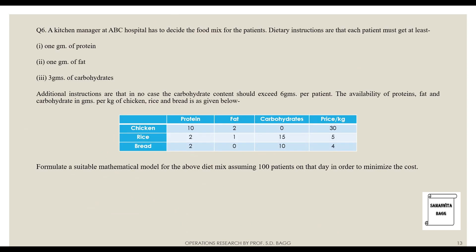The next problem is a diet mix problem. A kitchen manager at AVC hospital has to decide the food mix for patients. Dietary instructions state each patient must get at least 1 gram of protein, 1 gram of fat, and 3 grams of carbohydrates. Additionally, carbohydrate content must not exceed 6 grams per patient. The availability of protein, fat, and carbohydrates per kg of chicken, rice, and bread is given along with prices. The goal is to minimize cost assuming 100 patients.